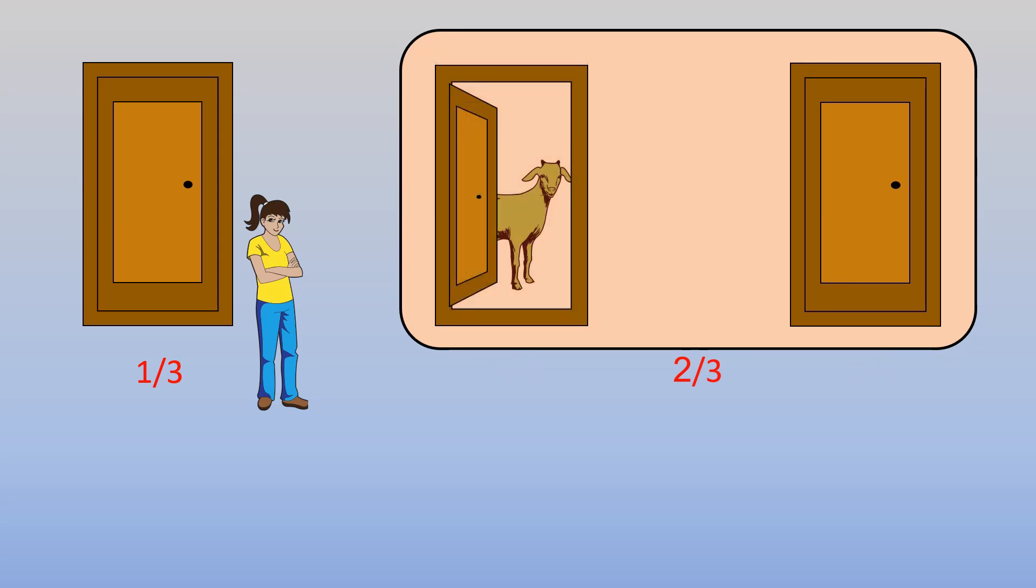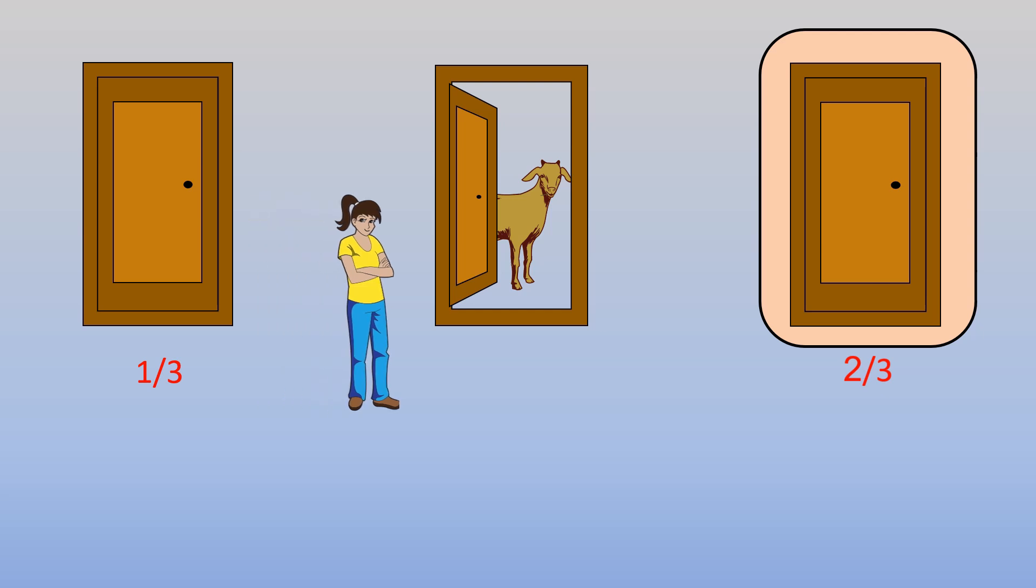When one of the goats are revealed, the chance of having the car behind one of the doors that you didn't choose will belong to that one single remaining door. Therefore, if you switch the door, the chance of winning would be two thirds compared to your current chance, which is still one third.